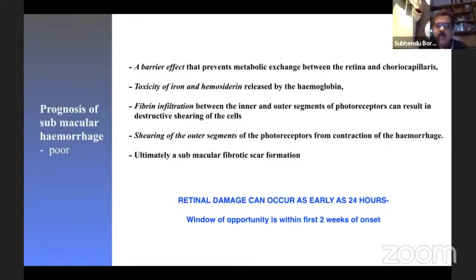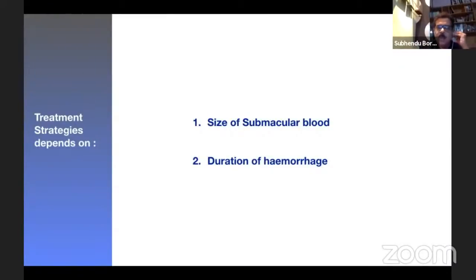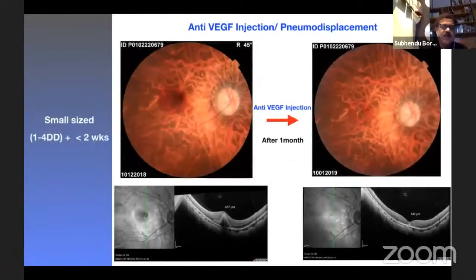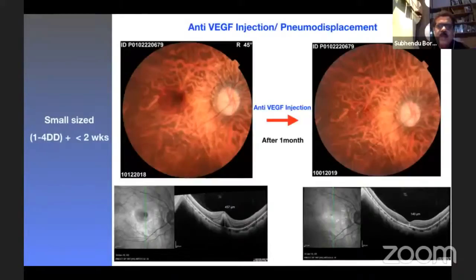The window of opportunity is within the first two weeks of onset of submacular hemorrhage. All treatment strategies depend on two most important factors: the size of the hemorrhage and the duration. If it is small size, less than 4 disc diameters, with less than two weeks duration, then anti-VEGF injection — if from CNVM or traumatic origin — plus pneumo displacement is enough to clear the hemorrhage and improve vision.